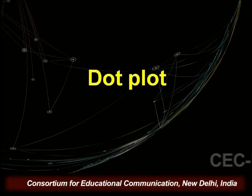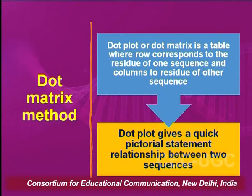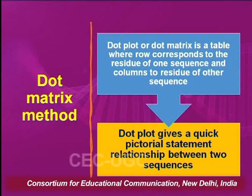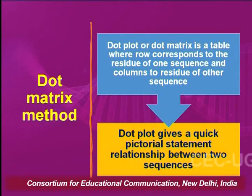Starting with the dot plot — what is a dot plot? It is a table where rows correspond to the residues of one sequence and columns correspond to the residues of the other sequence. A dot plot gives us a quick pictorial statement about the relationship between the two sequences.